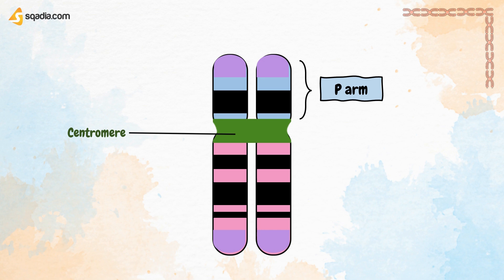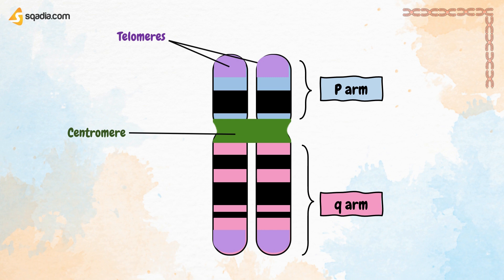The centromere is the region where the cell's spindle fibres attach. The chromosome also has a long arm called the Q-arm, and it has telomeres. Telomeres are the protective caps located at the end of each chromosome in our cells. These structures consist of repetitive DNA sequences and specialised proteins that help maintain the stability and integrity of our genetic material. As we age, telomeres gradually shorten due to natural cell division and environmental stressors, leading to cellular damage and ageing-related diseases.